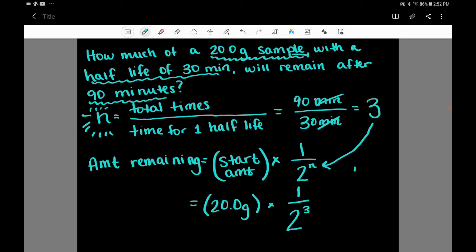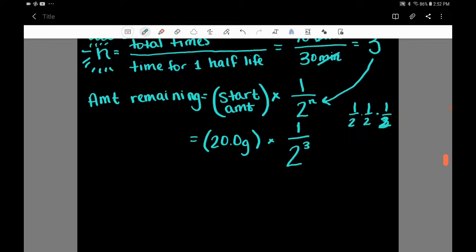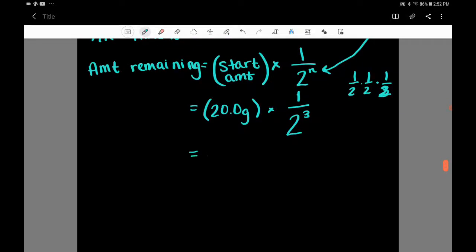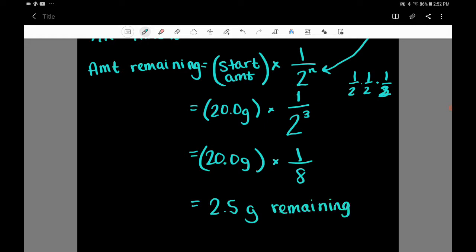Keeping in mind that this means we have three of these. One times two times two times two is actually eight. So if we were to kind of simplify this just a little bit further, we're going to have 20.0 grams times one eighth. So really what you can do in your calculator here, it's 20 times one divided by eight. All right, so what we get for that is 2.5 grams. So that's how much is remaining after three half-lives.